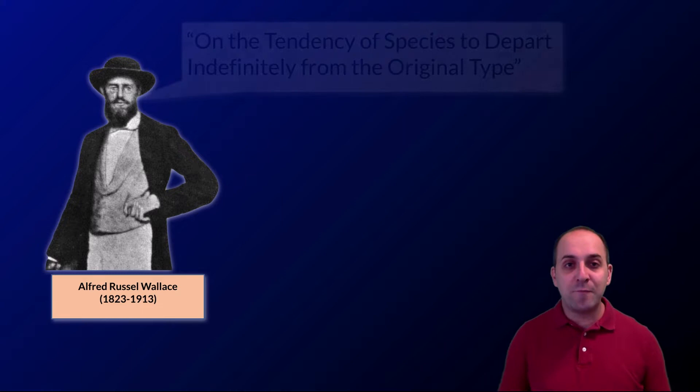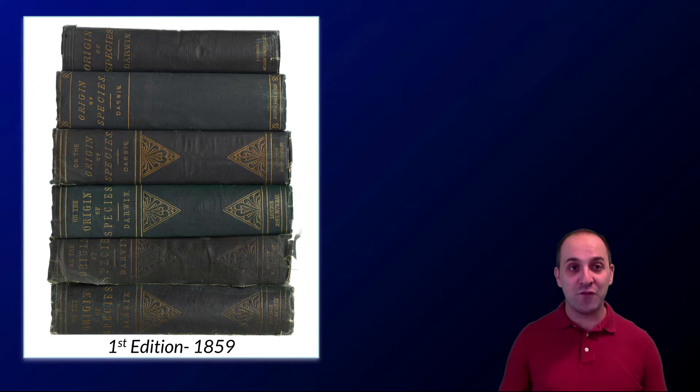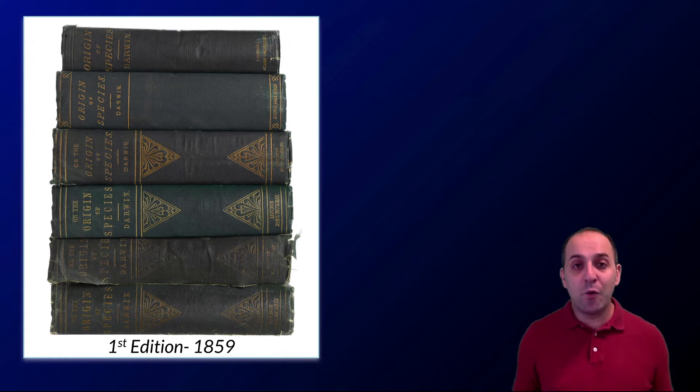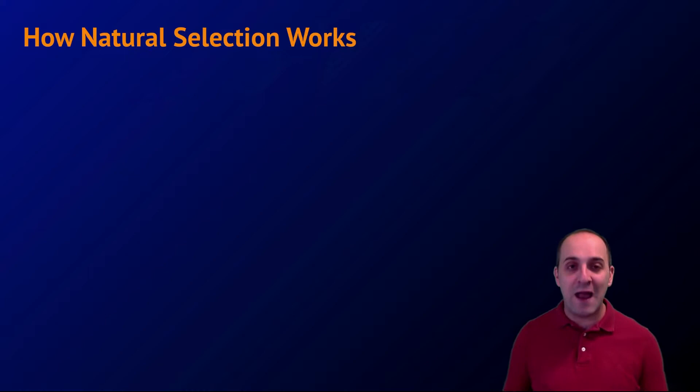Darwin was spurred to publish when he was contacted by a young naturalist named Alfred Russell Wallace, who wanted to share a theory of evolution he had developed that was almost exactly like Darwin's. Wallace's paper was titled 'On the Tendency of Species to Depart Indefinitely from Their Original Type,' but Darwin had a catchier title — 'On the Origin of Species.' It's important to recognize that Darwin and Wallace both gave each other mutual credit for developing the theory of natural selection.